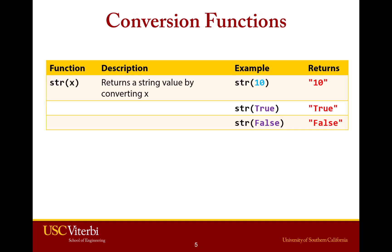There's a function called str. str will take, in parentheses, basically an integer, a bool, a float, some kind of number, and it'll turn it into a string. For example, if you say str(10), it's going to give you the string '10'. If you say str(True) — capital T — it's going to give you the string version of that boolean.